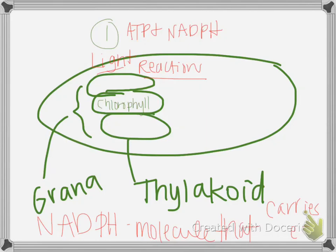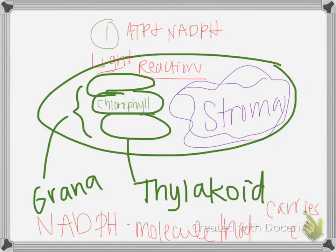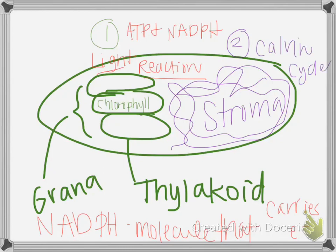All the space surrounding the thylakoid is the stroma — it's almost like the cytoplasm of the chloroplast. It's the watery space surrounding the thylakoid. The stroma is the site of the Calvin cycle, which is also called the light-independent reaction. The Calvin cycle and light independent mean the same thing, and its purpose is to make glucose.